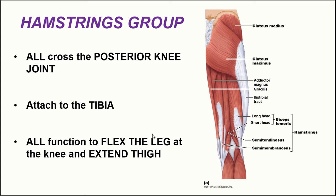An important principle: in order for a muscle to have action at a particular joint, it must cross that joint. You can infer which joints a muscle crosses just by looking at its actions. Unlike the quadriceps femoris, which did not cross the hip joint and therefore has no action there, the hamstrings cross both the hip and knee joints. The hamstrings function to either flex the leg at the knee joint or extend the thigh at the hip joint.